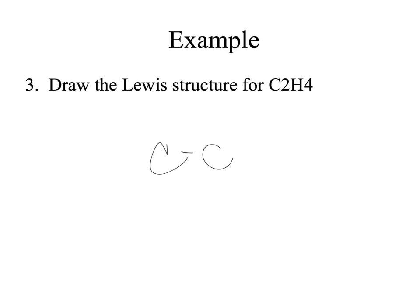Connect them with a bond, and we're going to put the four hydrogens around them. With two carbons, we're not putting one carbon in the middle and putting everything around it — that wouldn't work here. When you have more than one carbon, you'll have an organic molecule, and the carbons will be bonded to each other and then bonded to other things.